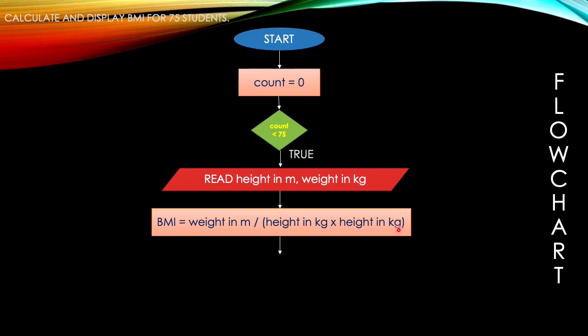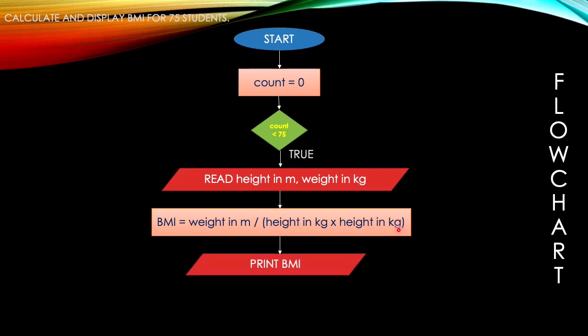Next we have the output. What is the shape for output? Good — it is a parallelogram again. So print BMI, because we calculated BMI and our output is BMI.